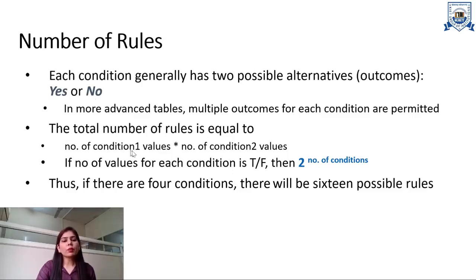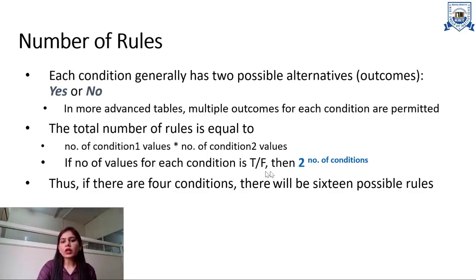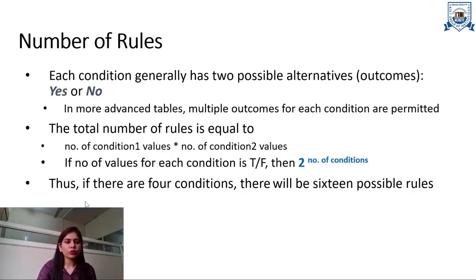The total number of rules is equal to the number of conditions multiplied by the number of condition values. If the values for each condition are true or false, then it is 2 raised to the power of the number of conditions. For example, with 2 conditions that gives 4 rules, and if there are 4 conditions there will be 16 possible rules.